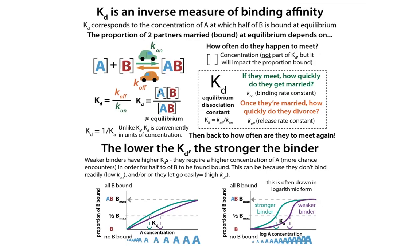You can think about it intuitively by considering what a lower KD means in terms of how much stuff needs to be around for you to be bound. If your KD is low, that means even if there's not that much of your partner around, you're still likely to be bound — either when you run into it you'll bind it tightly, or if you bind it tightly you're unlikely to let it go. Those would be our Kon and our Koff. The smaller the Koff or the bigger the Kon, the smaller the KD. The bigger the Koff or the smaller the Kon, the bigger the KD. Often in biochemistry, it's the Koff that matters more because we're limited by diffusion for really tight binders.